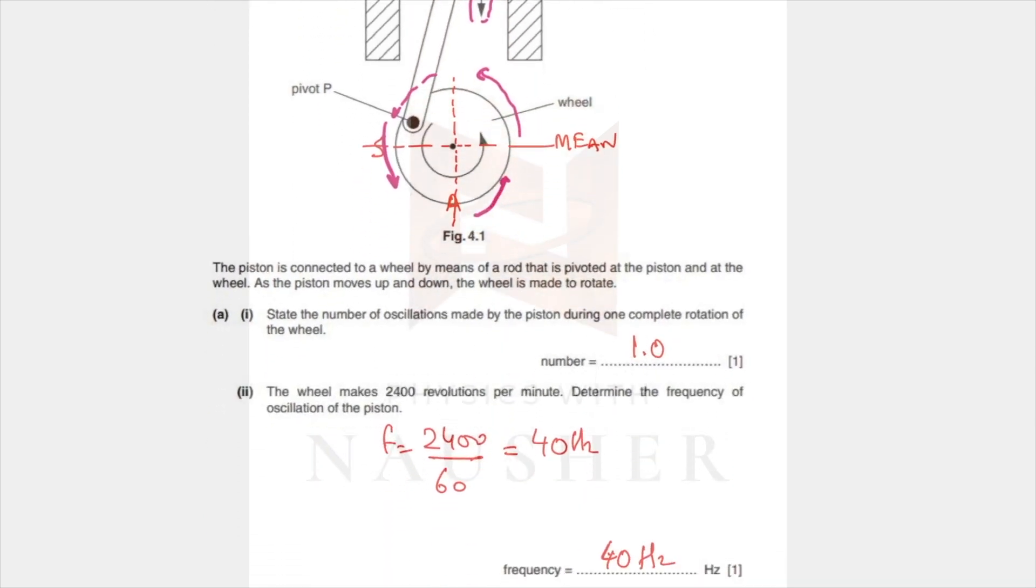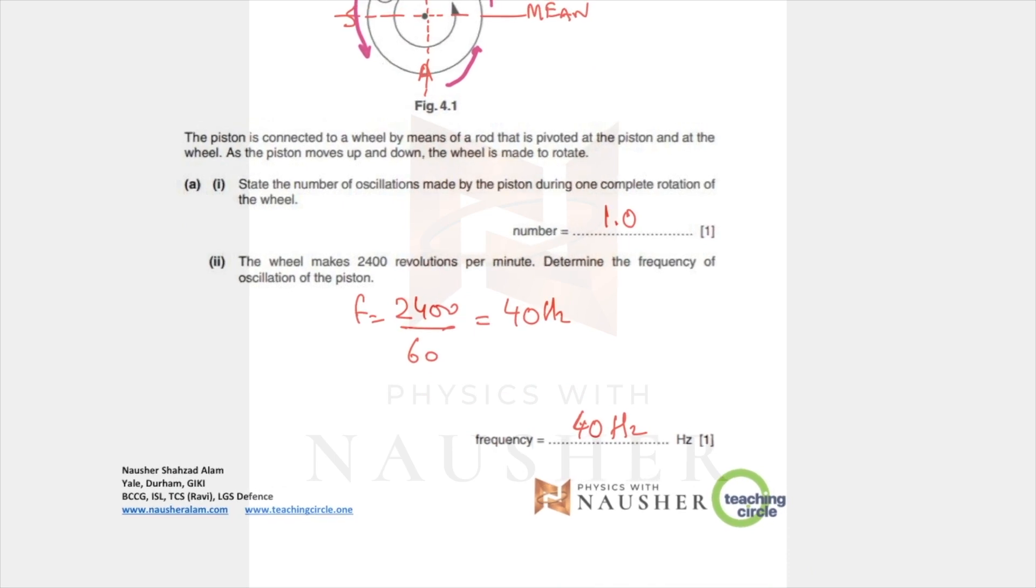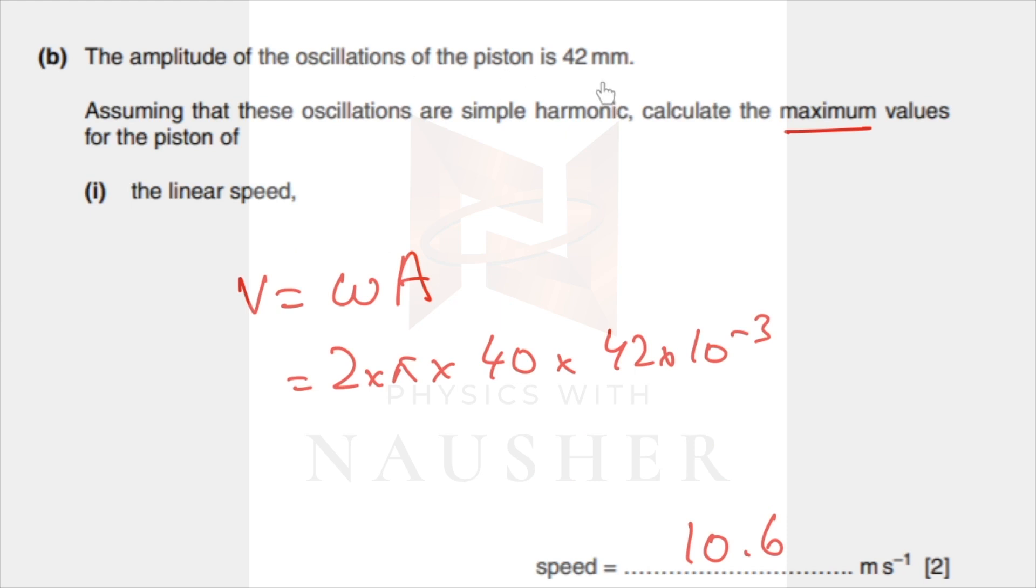Next part: what is the frequency? They told you 200 revolutions per minute, so per second it's 40. That's the answer, and you don't need to write hertz with it because hertz is already printed.